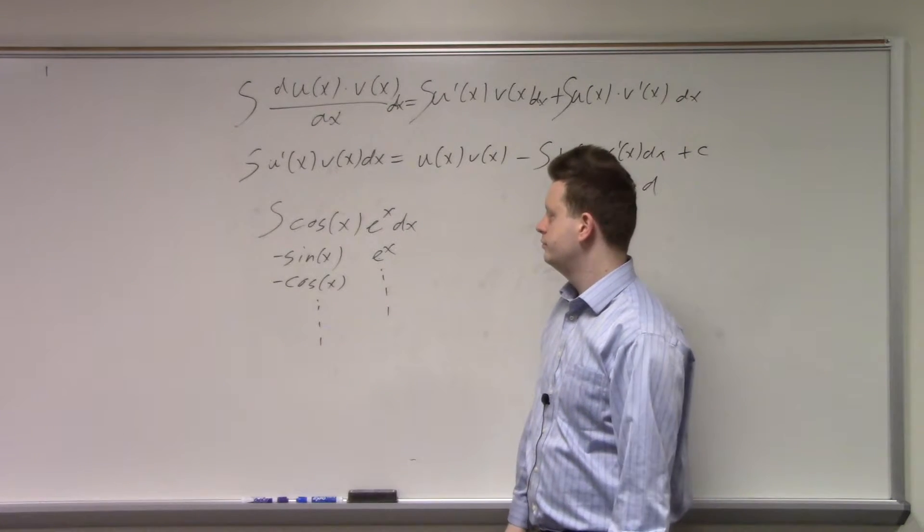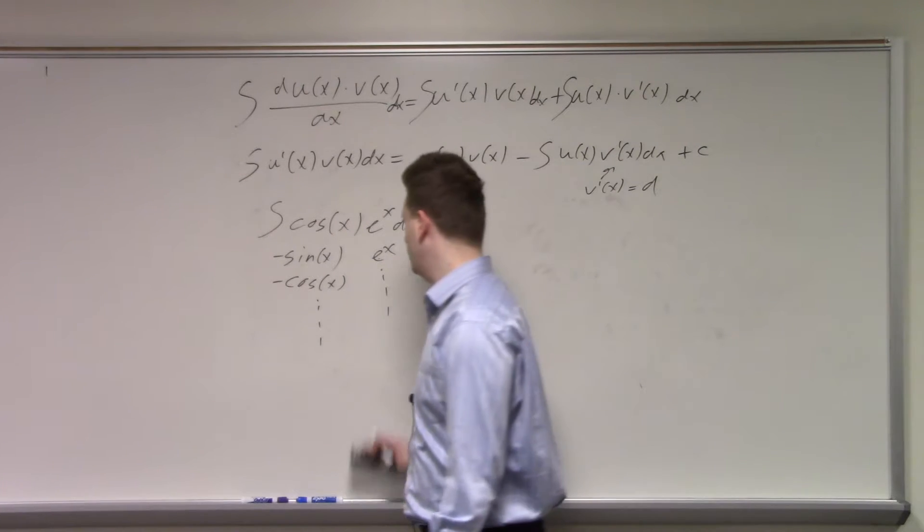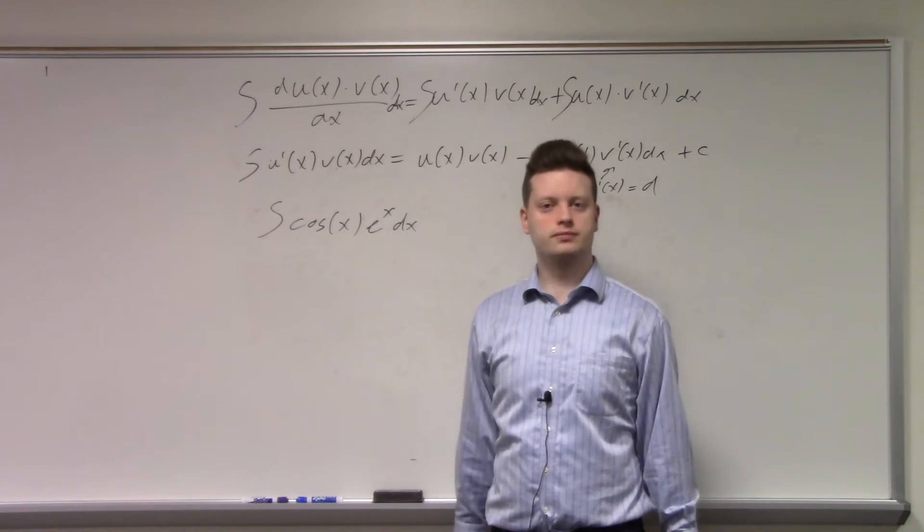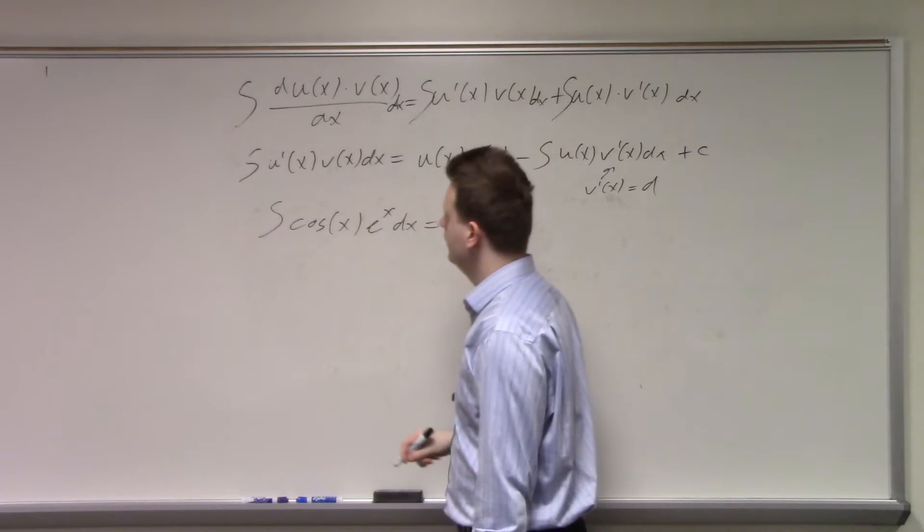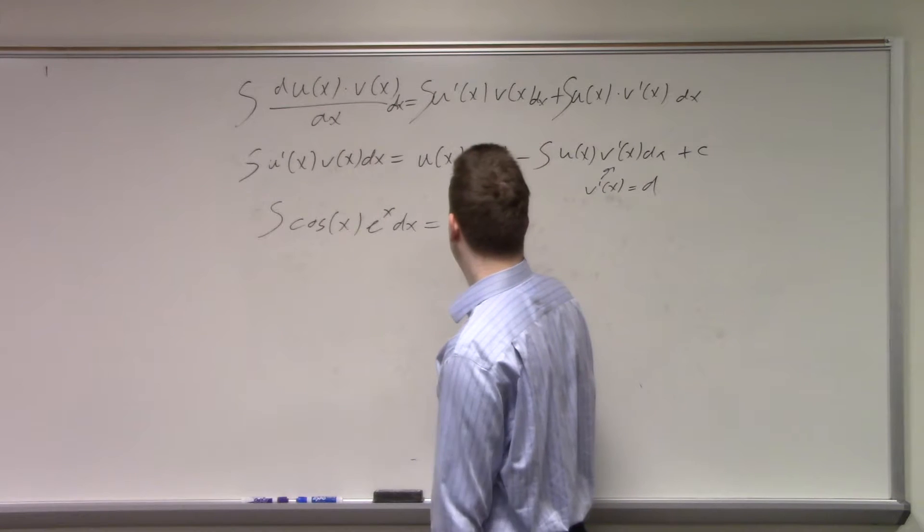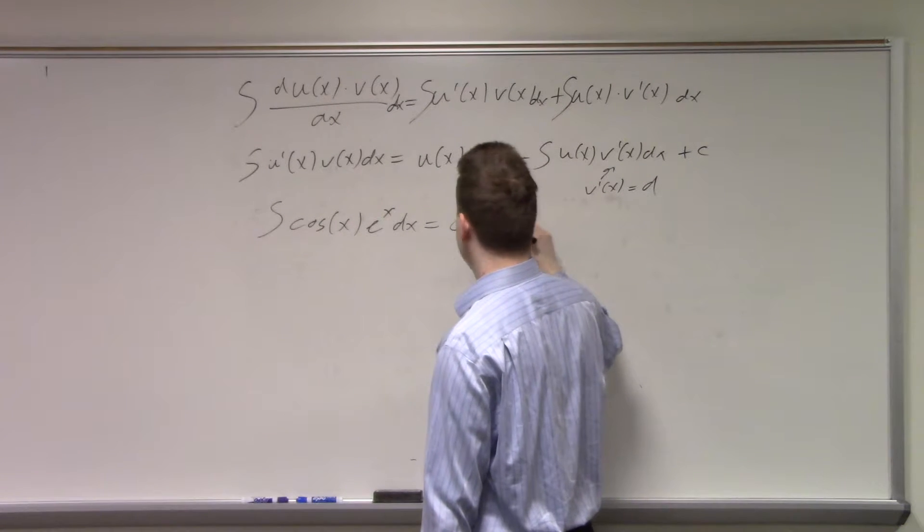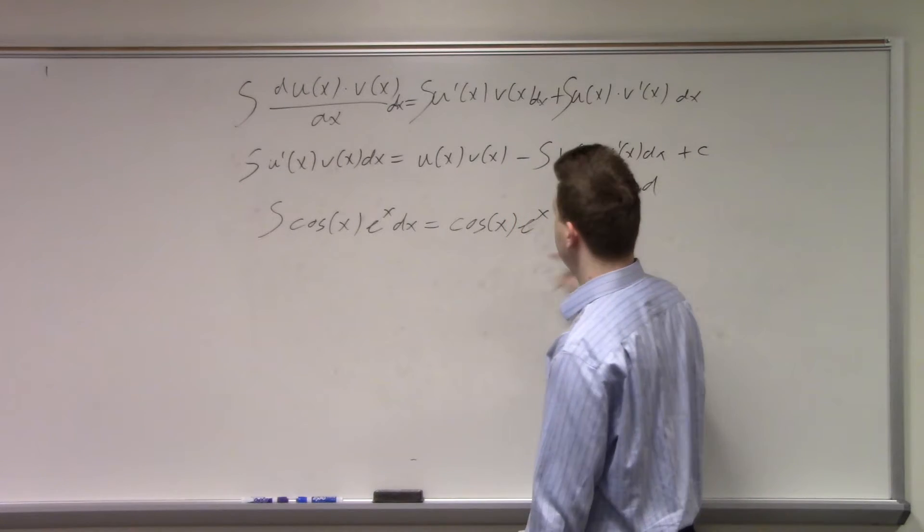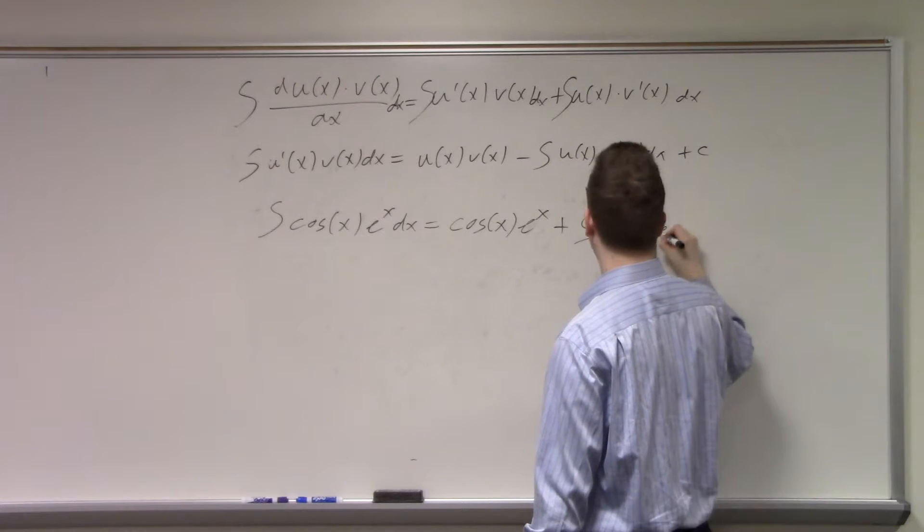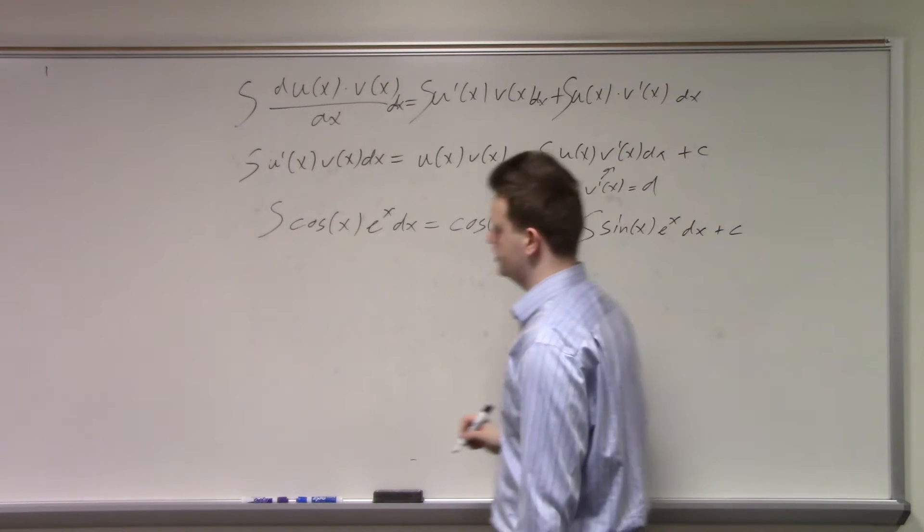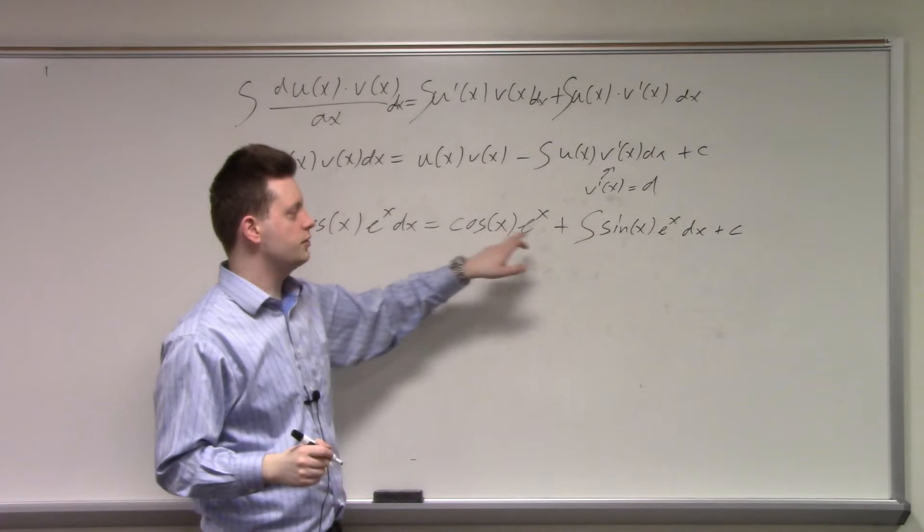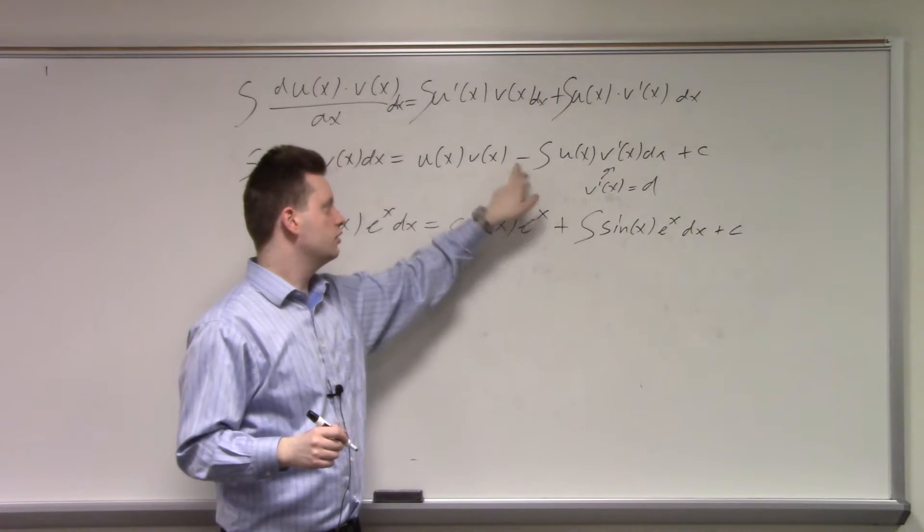Well, let's just do it anyway. Let's just apply this method and see what happens. Let's take the cosine to be v. So we get cosine(x) e^x minus the integral of, plus a constant. Note the plus, since the derivative of the cosine with respect to x is minus the sine, the minus here becomes a plus.